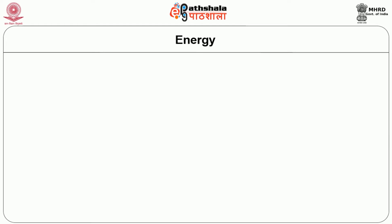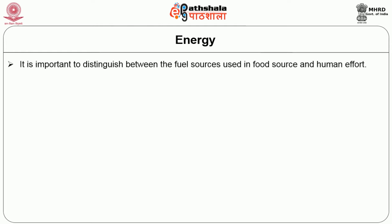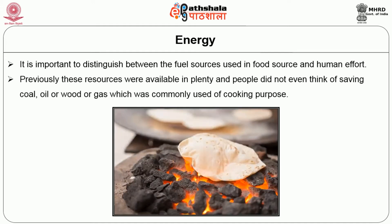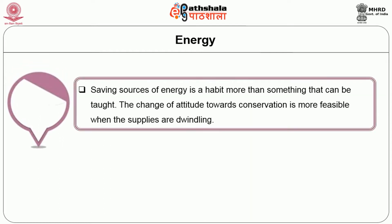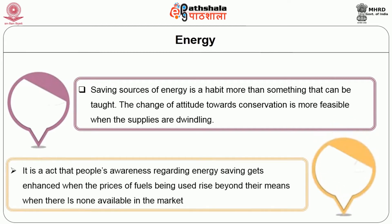The next important aspect in resource management is energy. It is important to distinguish between fuel sources used, the food source, and human effort. Previously, these resources were available in plenty and people did not think of saving coal, oil, wood, or gas commonly used for cooking. Saving sources of energy is a habit more than something that can be taught. The change of attitude towards conservation is more feasible when supplies are dwindling. People's awareness regarding energy saving gets enhanced when prices of fuel rise beyond their means or when there is none available in the market.